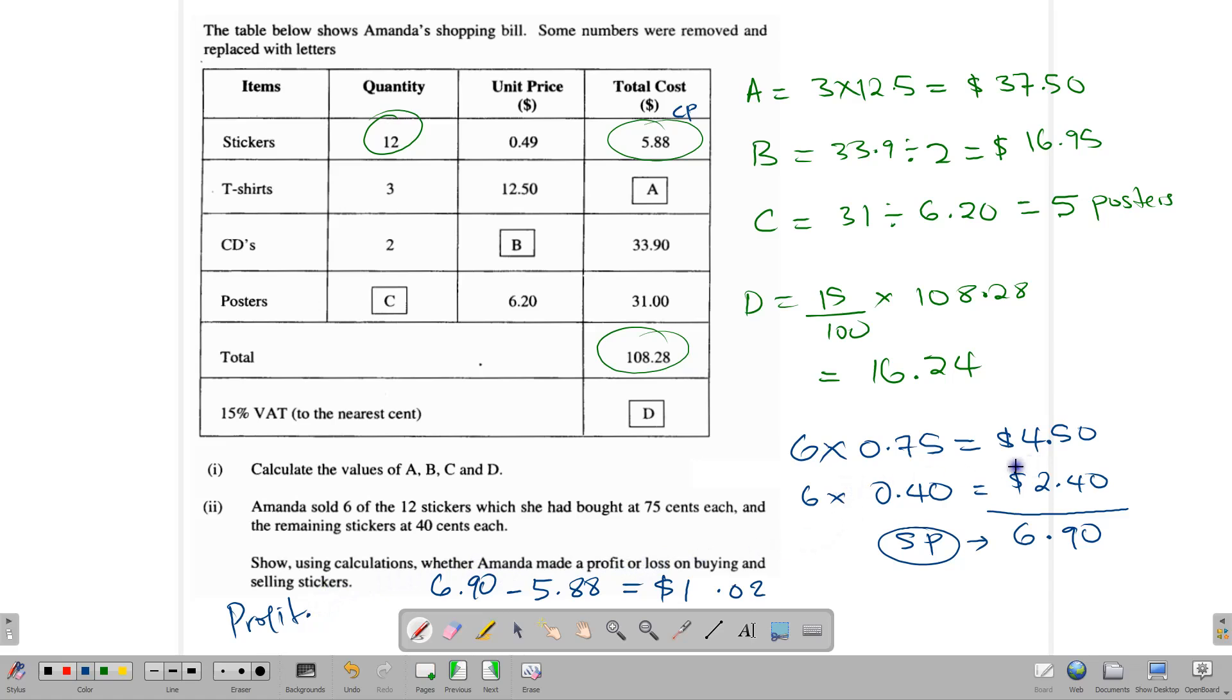And so she made a profit of $1.02. So show using calculations whether Amanda made a profit or a loss. We have done our calculations, and we have shown that she did make a profit, her selling price is greater than her cost price, which means that she made a profit. And that profit is $1.02.